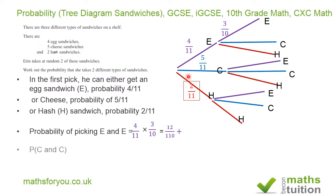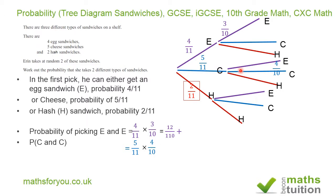The probability of picking a cheese sandwich and then another cheese sandwich is 5 over 11 times 4 over 10 — because having picked the first cheese sandwich, there will be only 4 cheese sandwiches left and only 10 sandwiches remaining on the shelf. That gives us 20 over 110.